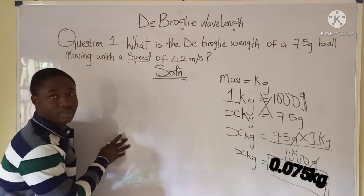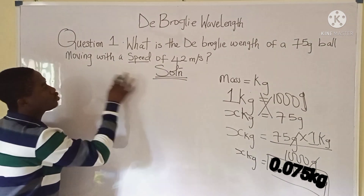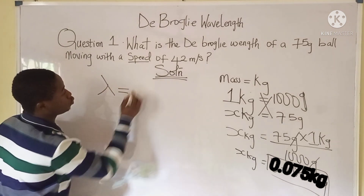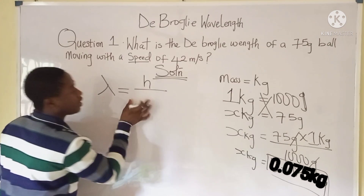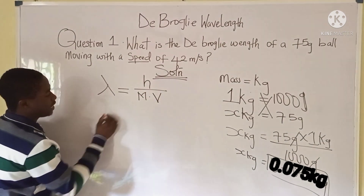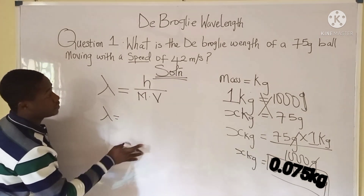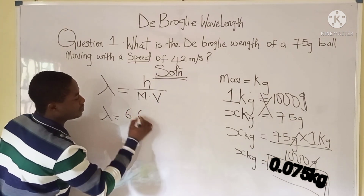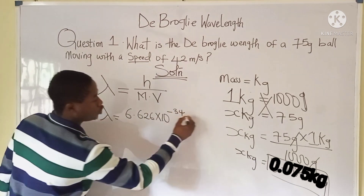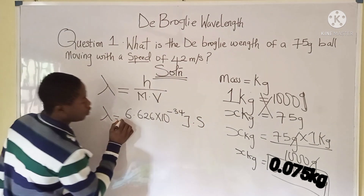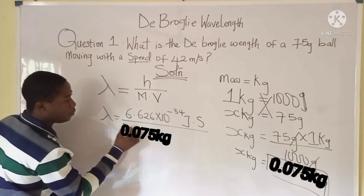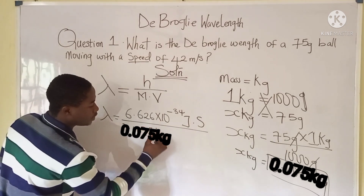Now let's input the parameters. De Broglie's wavelength lambda equals Planck's constant h over mass times velocity. Planck's constant is 6.626 times 10 to the power of minus 34 joule-seconds, divided by the mass in kilograms — which is 0.075 kilograms.